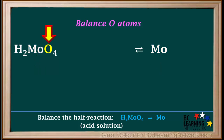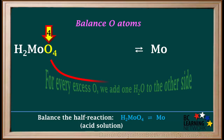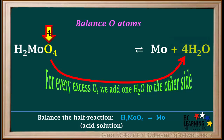Our next step is to balance oxygen atoms. We see there are four oxygen atoms on the left and none on the right. Remember, for every excess oxygen atom on the left, we add one H₂O molecule to the right. So we add four water molecules to the right side. Now we see there are four oxygen atoms on both sides, so oxygen is balanced.